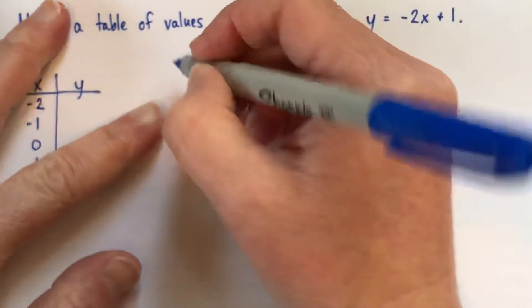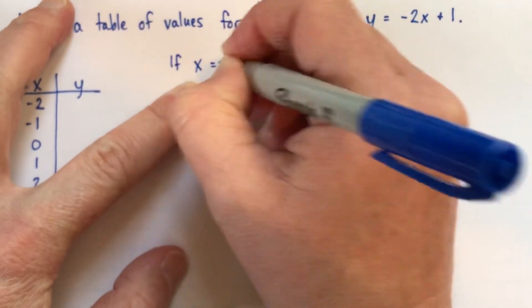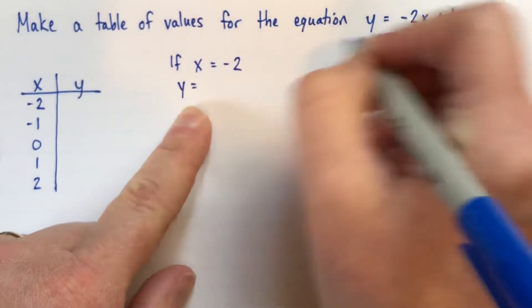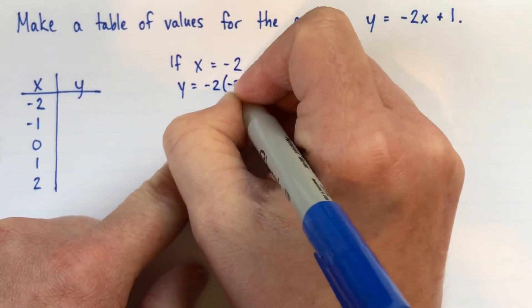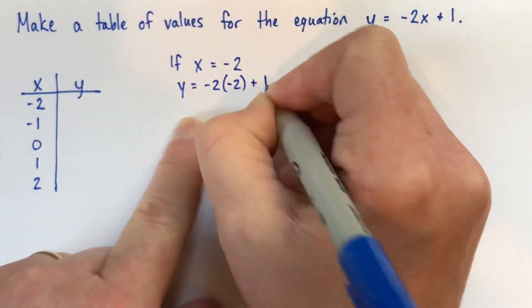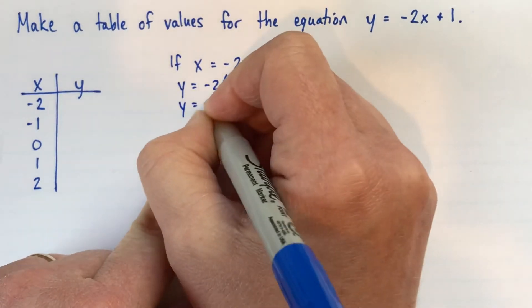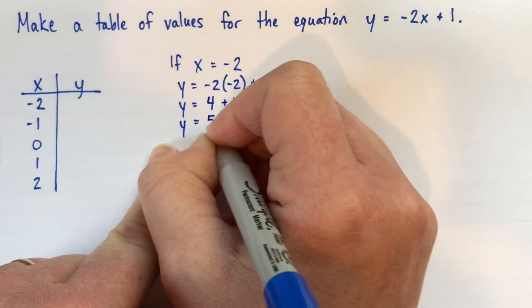And for this one I will show all the calculations, they're pretty quick. So if x equals negative 2, y is equal to negative 2 times negative 2, because I'm substituting for x, plus 1. So negative times negative is positive, so that's 4 plus 1, and y is equal to 5.